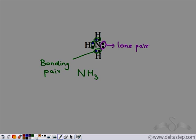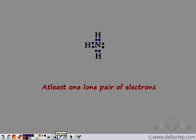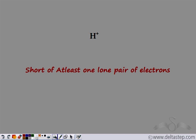Now we will look at a type of compound formation in which we need a species which has at least one lone pair of electrons. In this case, ammonia has one lone pair of electrons, so this is one of the species for the requirement of another compound formation. This is a lone pair of electrons in ammonia. We need a species which has at least one lone pair of electrons, and another species that we need is something which is short of one lone pair of electrons.